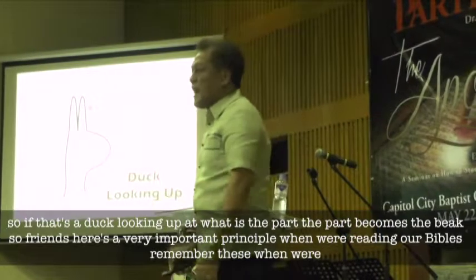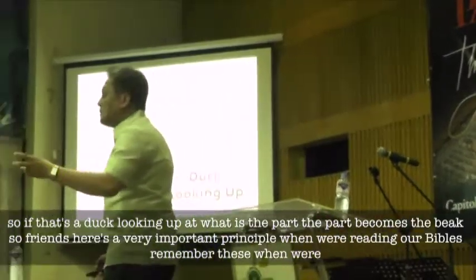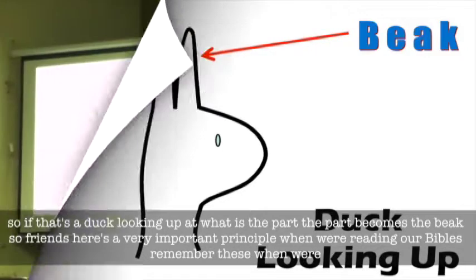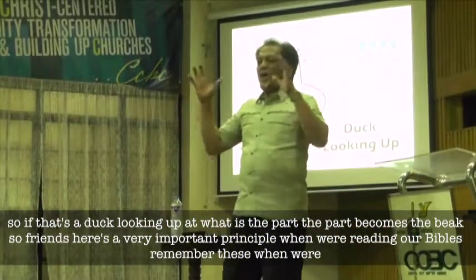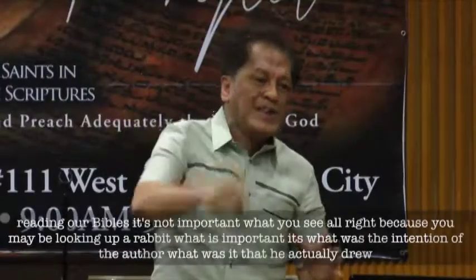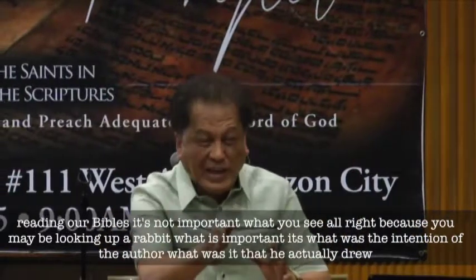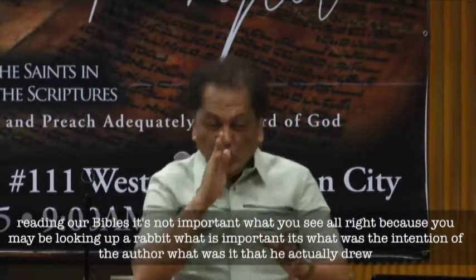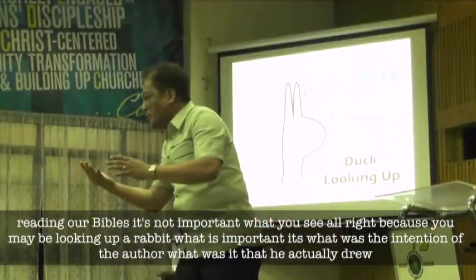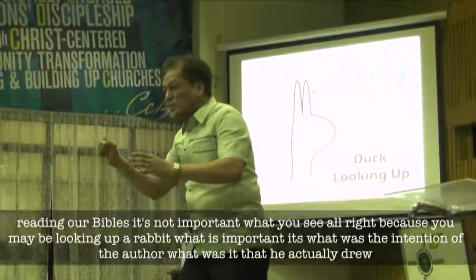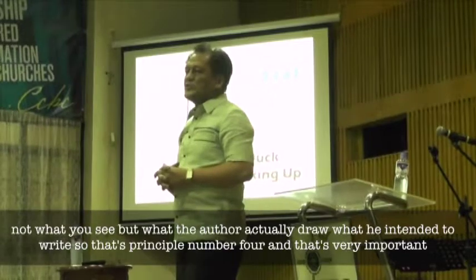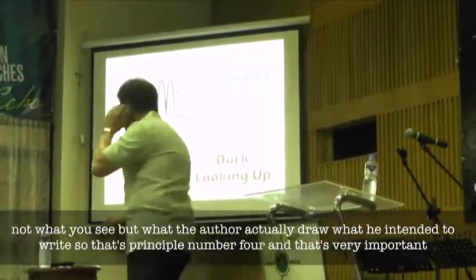So, if that's a duck looking up, what is the part? The part becomes the beak. Here's a very important principle when we're reading our Bibles: it's not important what you see, because you may be looking at a rabbit. What is important is what was the intention of the author — what was it that he actually drew. Not what you see, but what the author actually intended to write. That's principle number four, and that's very important.